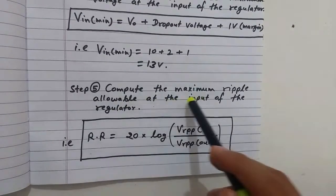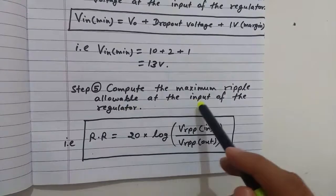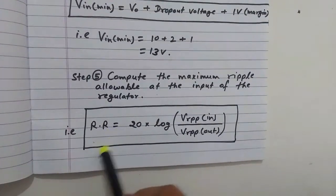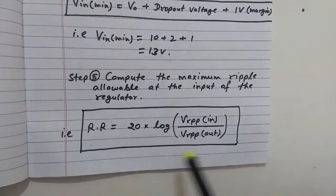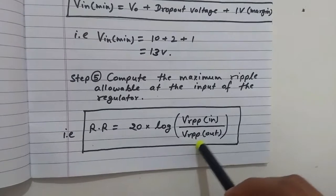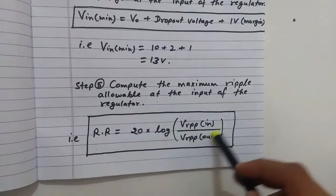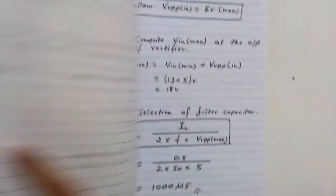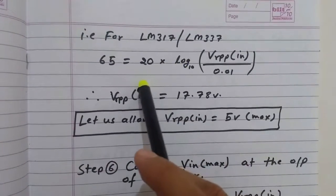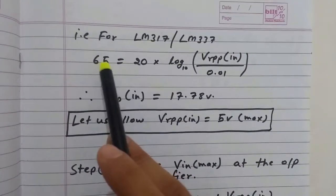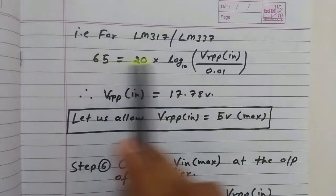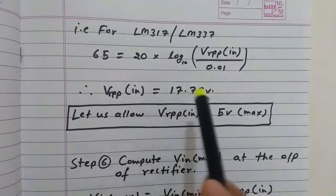The fifth step is to compute the maximum allowable ripple at the input of the regulator IC. The ripple rejection formula is: Ripple Rejection (dB) = 20 × log(V_ripple(p-p) input / V_ripple(p-p) output). For LM317 and LM337 the ripple rejection is 65 dB from the datasheet, giving V_ripple(p-p) input equal to 17.7 V.